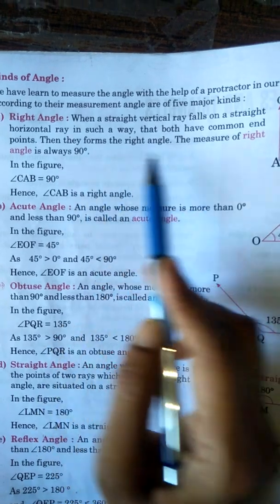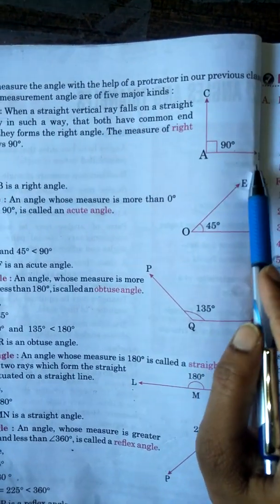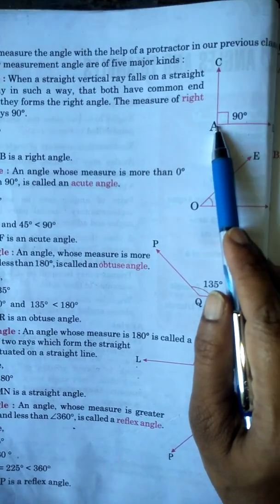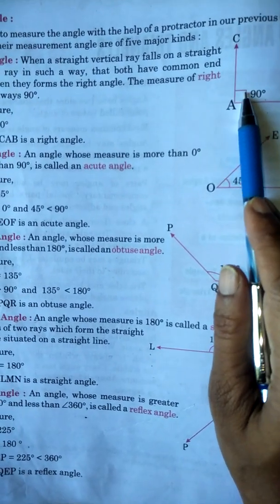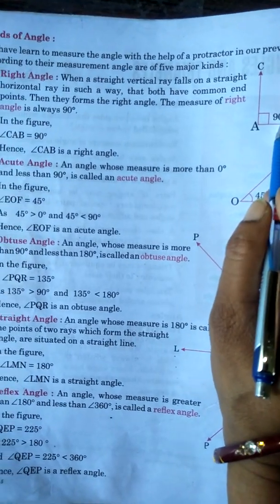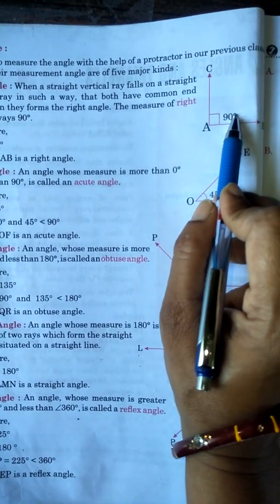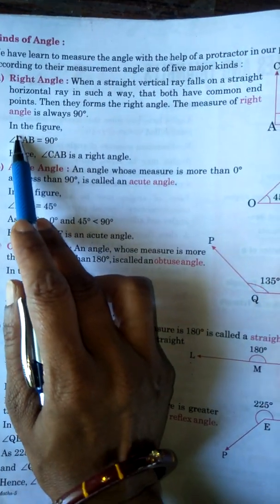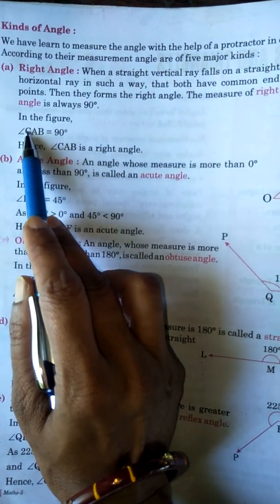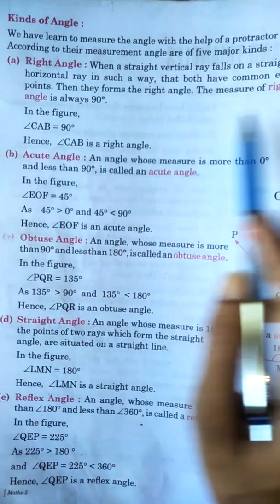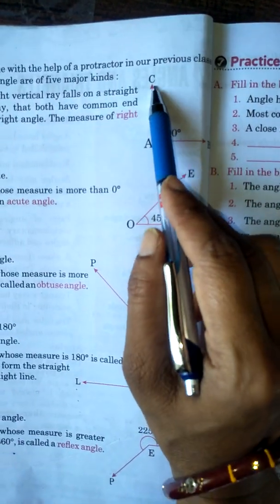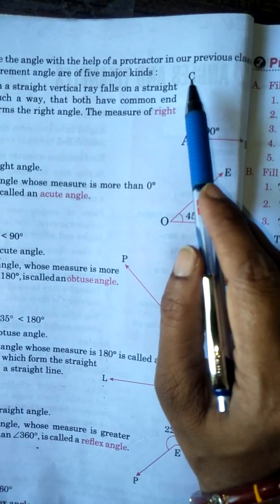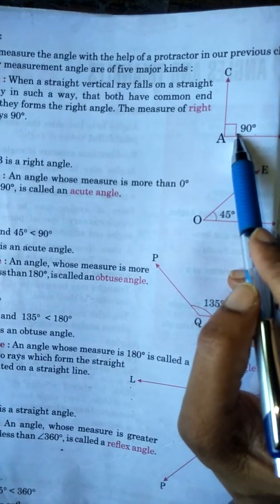Jab koi vertical ray kisi straight line par girti hai aur wo bilkul seedhi hoti hai, to right angle banta hai. Right angle hamesha 90 degree ka hota hai. Jab bhi 90 degree ka angle ho, matlab wo right angle hai. Is figure mein angle CAB equal to 90 degree hai — angle hamesha beech mein likha jaata hai, means angle CAB 90 degree.